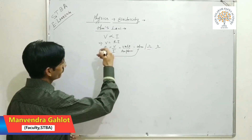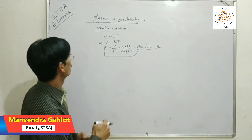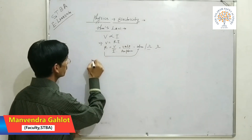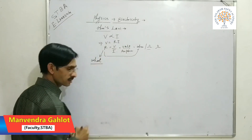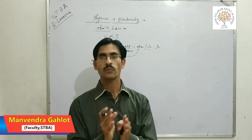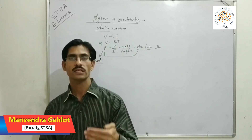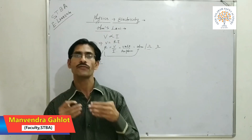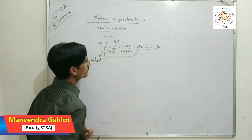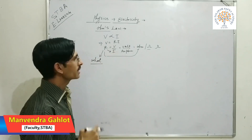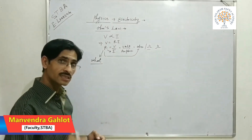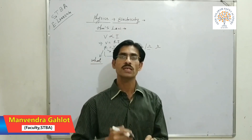So that was the last class. Moving to the next topic — R equals V upon I — that means resistance. What do you mean by resistance? Resistance is a property of a conductor to oppose the flow of current or the flow of charge. Conductivity is directly proportional to the amount of current, while resistance is inversely proportional to the current.